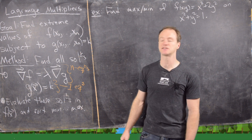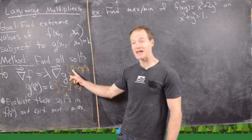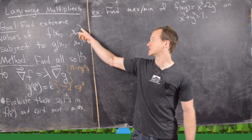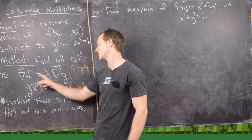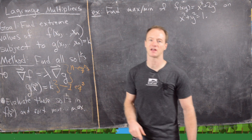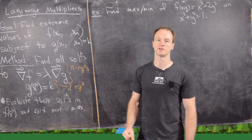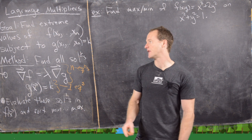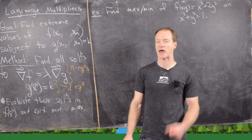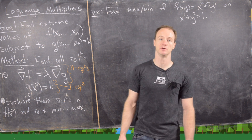The method goes as follows: we want to find all solutions to the system where the gradient of f equals lambda times the gradient of g. That's n equations, because the gradient is a vector with as many entries as variables. Combined with the constraint equation, we have n plus 1 equations in n plus 1 unknowns: x1 to xn and lambda. We evaluate all those points in the original function, sort from minimum to maximum, and identify the absolute maxes and mins.